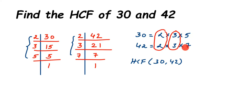Since 5 and 7 don't have pairs, leave them. The ones that have pairs — 2 and 3 — are present in both numbers. Take one number from each pair and multiply them: 2 × 3 = 6. So 6 is the Highest Common Factor of 30 and 42. That's the prime factorization method.